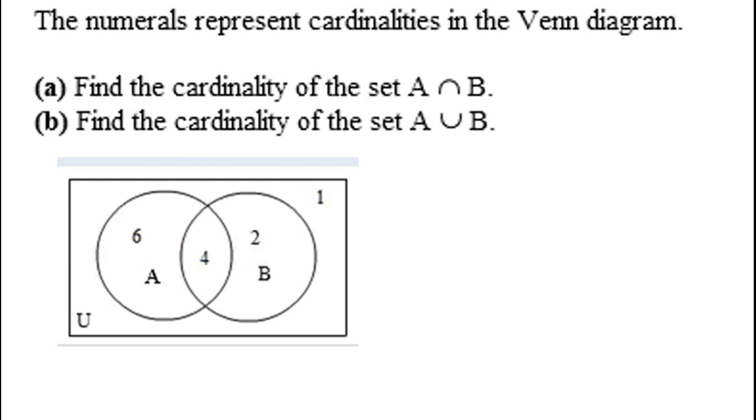Question A says find the cardinality of the set A intersect B. Well, the number of elements in A intersect B refers to the region of overlap. Intersect means overlap. And there are four elements indicated to be in that region.